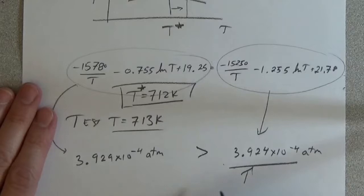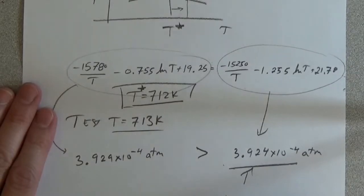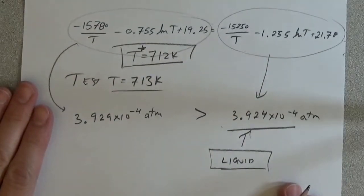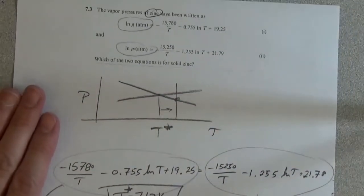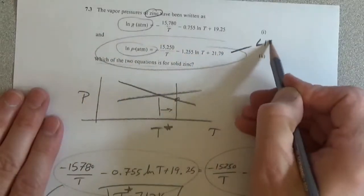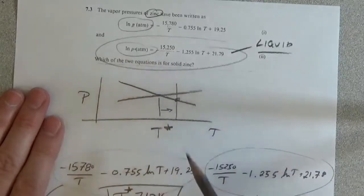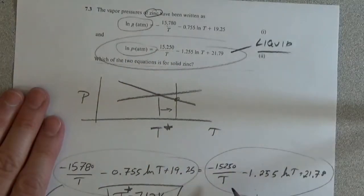This is the liquid. And looking at the back of your book, we indeed find that this is the expression for the vapor pressure above liquid zinc.